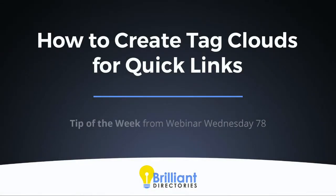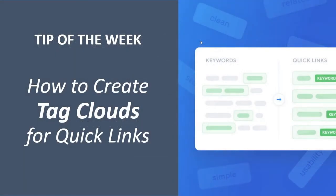This week's tip is how to create tag clouds for quick links. We're covering this because people are asking about it in the Facebook group and we're getting support inquiries on how to create links to popular pages on a site. Tag clouds in their original form were pretty popular close to a decade ago, mainly on WordPress sites where the most common keywords appeared in a sidebar widget. We've modernized that idea and will walk through how to get that going on your Brilliant Directory site.